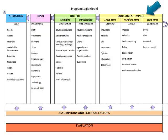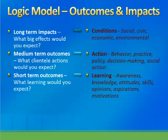Impacts and outcomes are about changes in conditions, action, and learning. To complete the impacts and outcomes section, you need to consider what you hope will be achieved as a result of the educational program. First, reflect on the big effects you would expect your program to contribute toward if implemented. These include things like social, civic, economic, and environmental conditions.